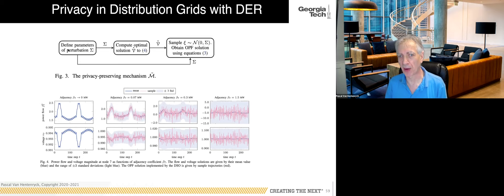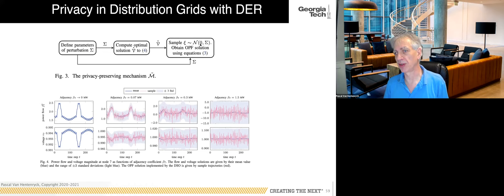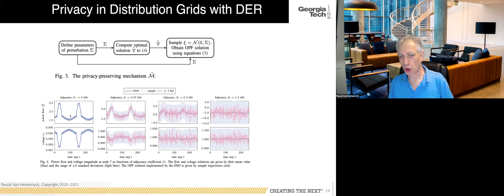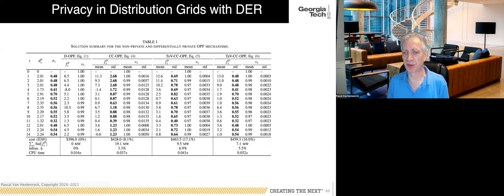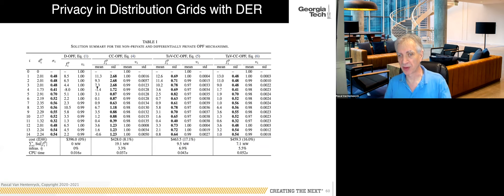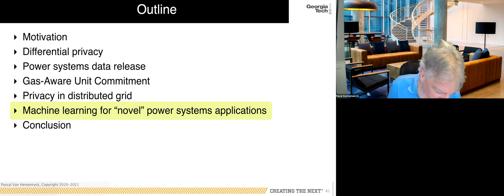You choose your parameters — the correlation structure of the noise — solve the chance-constrained optimization, dispatch accordingly, then introduce Gaussian noise. The more privacy guarantee you require, the less you can recognize the ground truth on generations and loads. There is a cost: you may dispatch more expensive generators, with costs around 8% in some test cases. But this is a trade-off you can tune by adjusting the privacy guarantee.